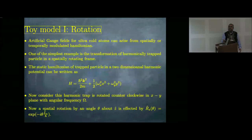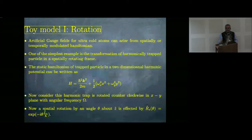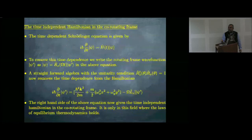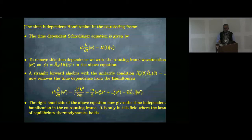Artificial gauge fields in ultracold atoms can arise from spatially or temporally modulated Hamiltonians. The essential idea is to take the kinetic energy term and somehow change the momentum from k to k minus eA/c — that is the whole thing. One of the first ways of doing this is rotation of the system. If you rotate the system and go to the rotating frame, you do this corresponding transformation and get the Hamiltonian in the rotated frame.